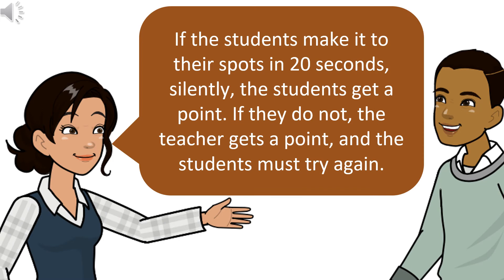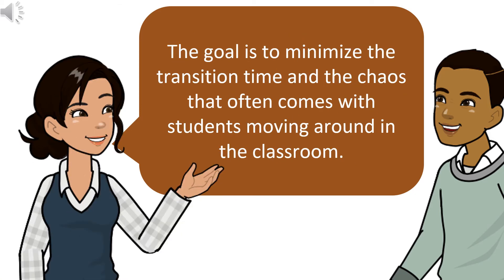If the students make it to their spots in 20 seconds, silently, the students get a point. If they do not, the teacher gets a point, and the students must try again. The goal is to minimize the transition time and the chaos that often comes with students moving around in the classroom.